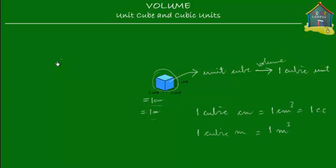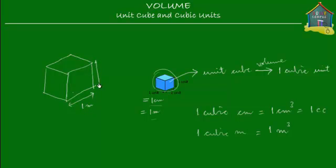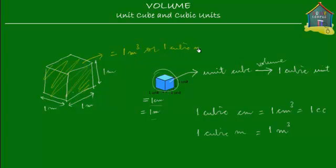So if there is a cube here like this, which had each of its sides equal to one meter — this was one meter, this was one meter, and this was also one meter — then the volume that this solid occupies will be equal to one meter cube, or one cubic meter.